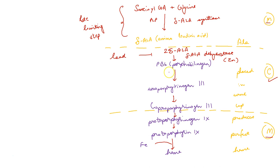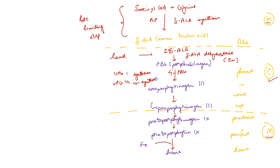Four molecules of porphobilinogen then condense to form uroporphyrinogen 3. This requires two enzymes: uroporphyrinogen 1 synthase and uroporphyrinogen 3 cosynthase. This is a deamination reaction.